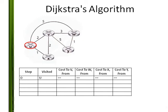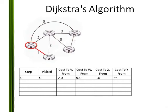I mark that I have visited U. I add the cost to my neighbors — these two: W is 5, X is 1.